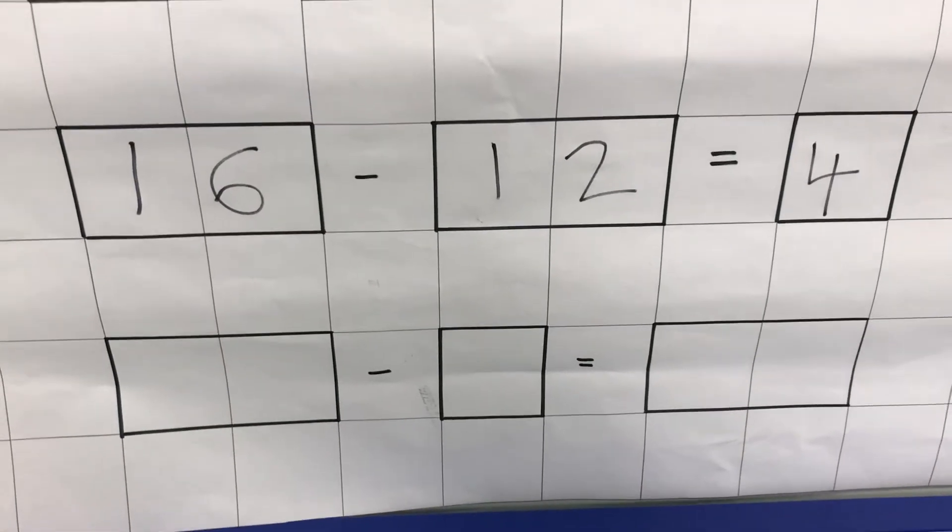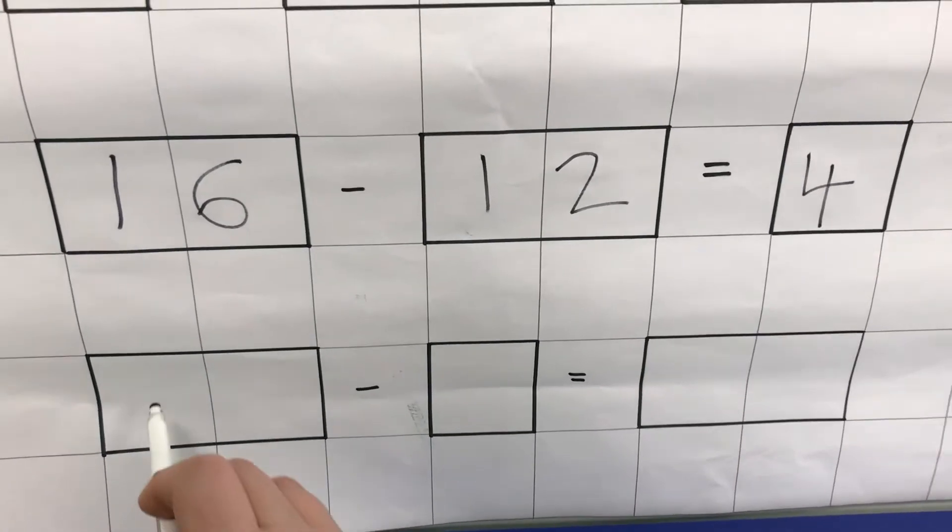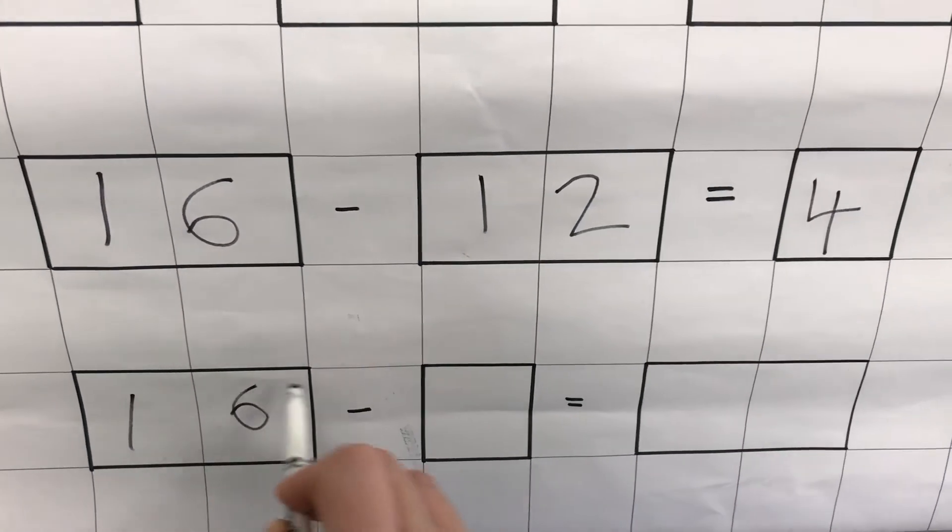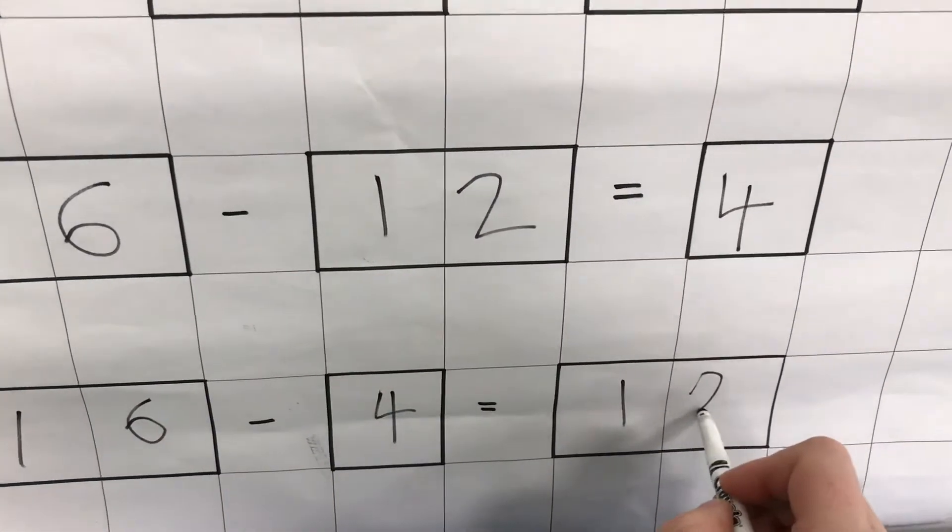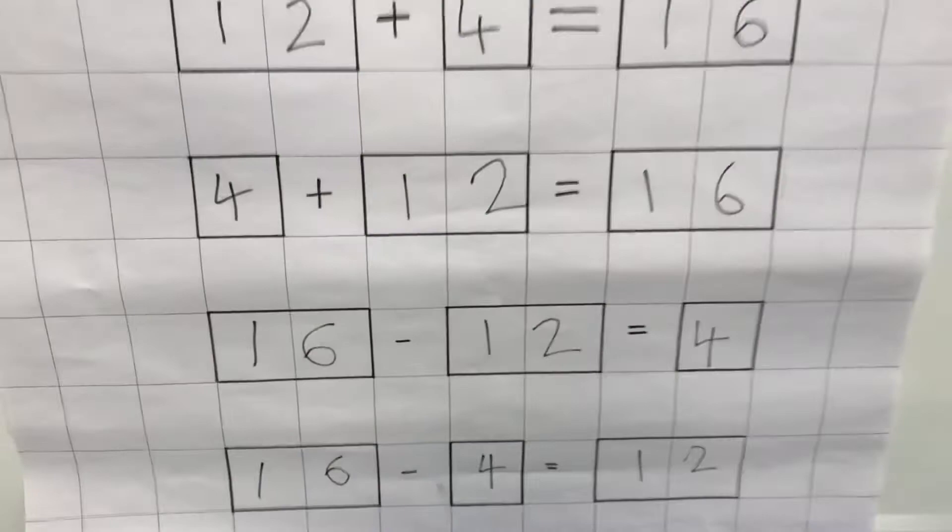I can then swap my 12 and my 4 around again. So I'm going to start with the bigger number. I'm going to take away 4, and the answer is 12. And that there is my fact family.